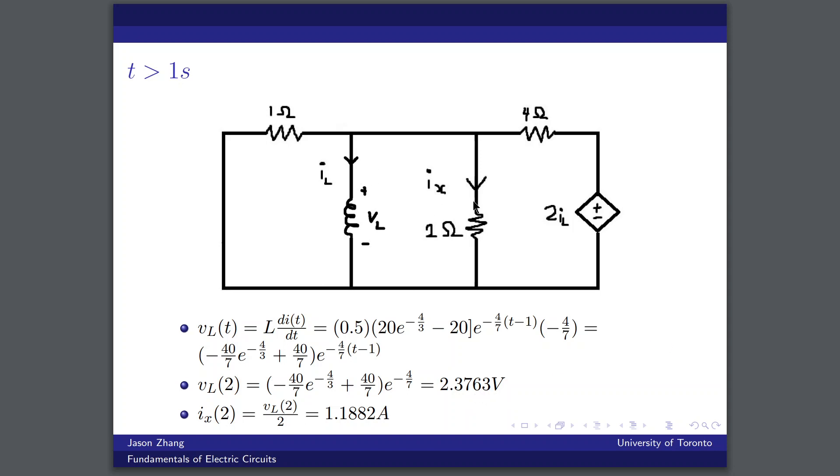We should note that the inductor is in parallel with this 2 ohm resistor. And so the voltage difference across the inductor is the same as the voltage difference across the 2 ohm resistor. And so in order to find ix at t equals 2 seconds, we can take the potential difference and divide it by the resistance, which is 2 ohms. And we'll find that our final answer for I sub x at t equals 2 seconds is 1.1882 amps.